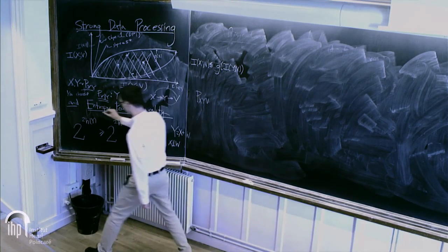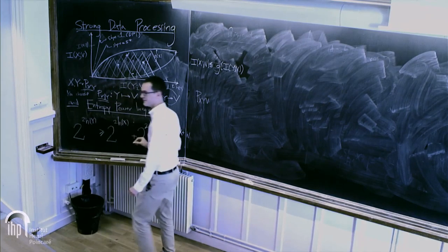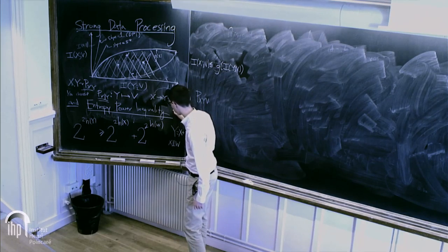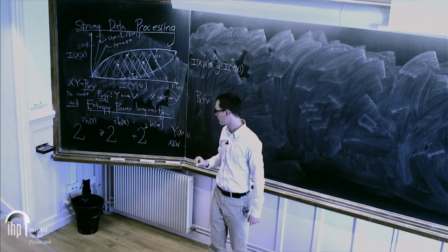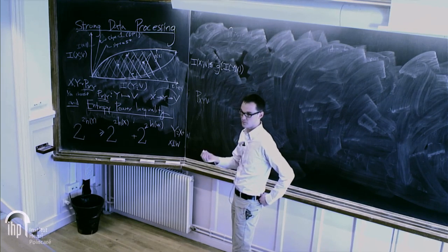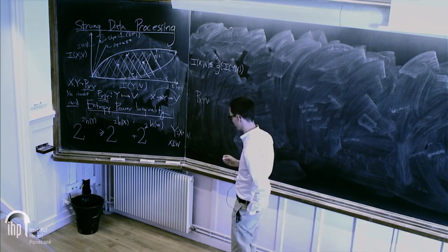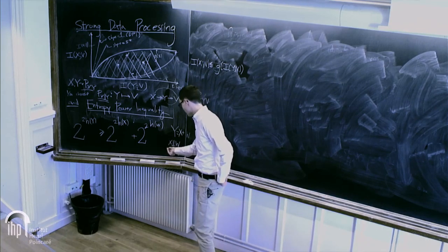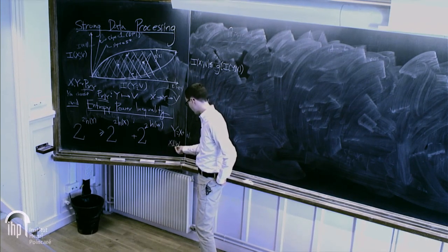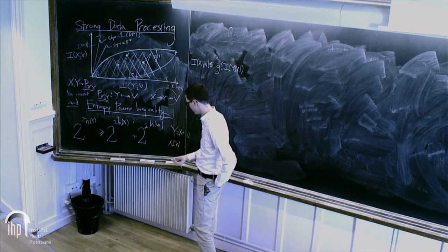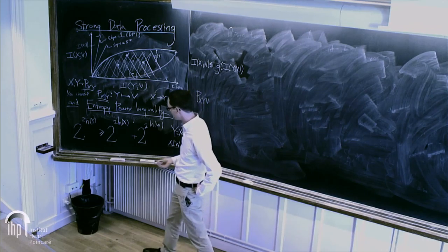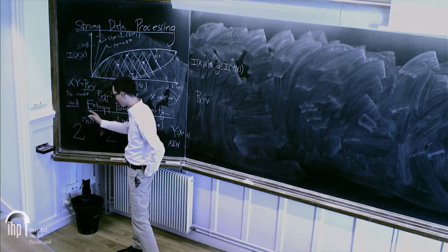So the talk is about strong data processing and the entropy power inequality. The entropy power inequality is an inequality about the entropy of the sum of random variables. If I take a random variable X with density, and a random variable Y also with density, and add them together, the entropy power inequality gives a lower bound on the entropy of the sum.